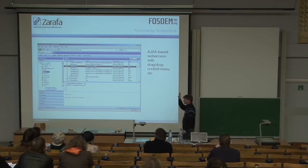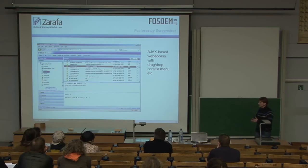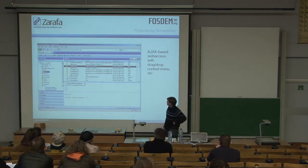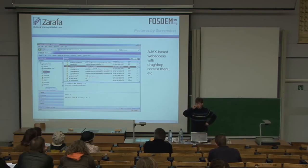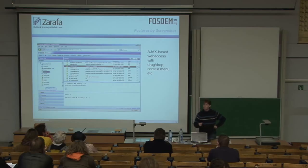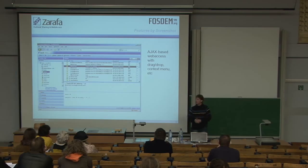I thought it was a good idea to go through the product by making lots of screenshots. This is a screenshot of our webmail running in Firefox. You can already see directly that it has a lot of similarities to what you'd be using in Microsoft Outlook — with folders on the left and emails at the top. The reason for that is that a lot of users trying to get to open source software currently use Outlook and they'd like to use something that looks and feels like their Outlook product.